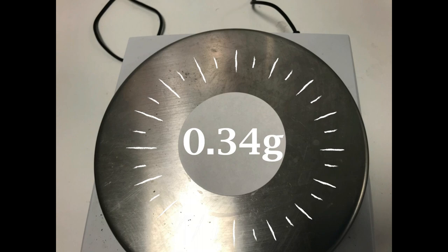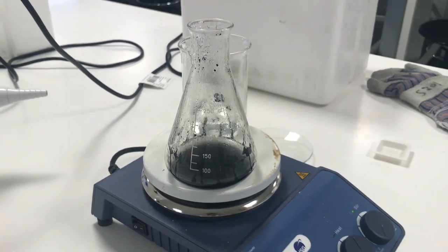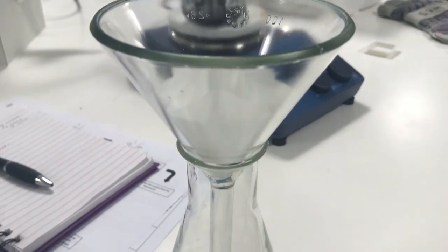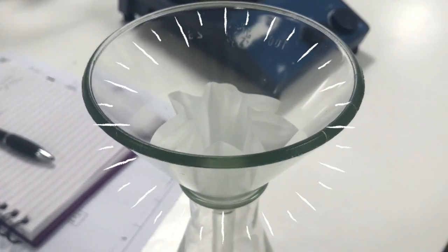Place a piece of filter paper onto the scales and record the weight. Fold the filter paper into a funnel placed within the top of a clean conical flask. Then add a little water to dampen the filter paper.